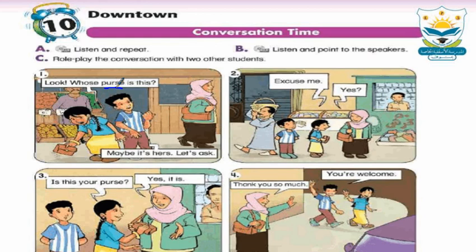See with me this conversation and repeat after me, please. Sara says: 'Look, whose purse is this?' Ali says: 'Maybe it's hers. Let's ask.' Sara says: 'Excuse me.' The woman answers: 'Yes.' Sara asks: 'Is this your purse?' The woman says: 'Yes, it is. Thank you so much.' They reply: 'You're welcome.'